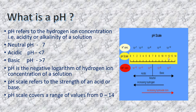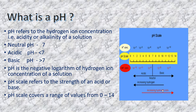Looking at the pH scale ranging from 0 to 14, the center is neutral where pure water sits. Below 7 is acidic and above 7 is basic. As you move below 7, hydrogen ion concentration increases, and as you move above 7, it decreases. Hydroxide ions (OH⁻) behave in the opposite manner — decreasing below 7 and increasing above 7.